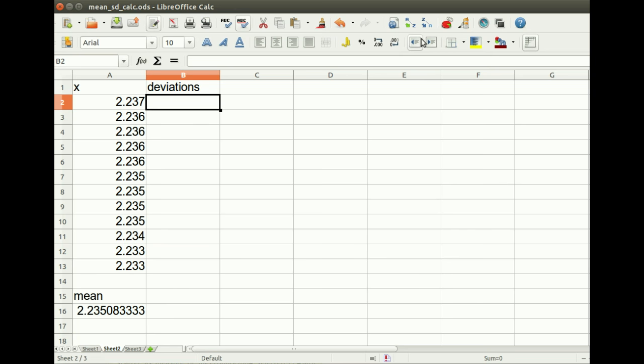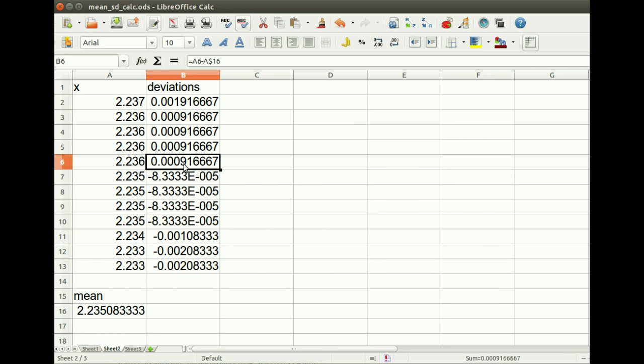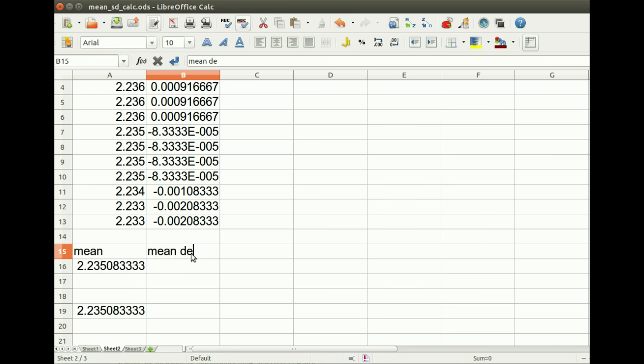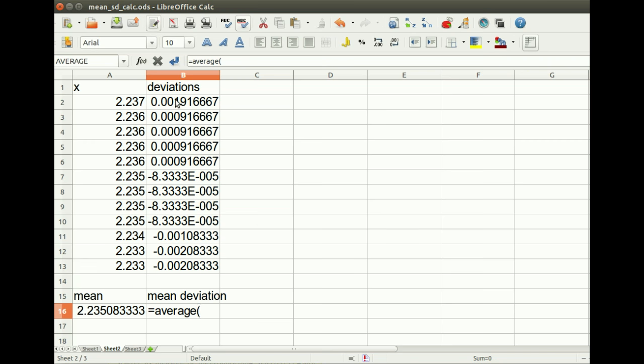One way to think about the typical range of variation is to realize that we sort of expect our measurements to cluster around the mean. Measurements in the middle of the range should be the most common. And so we can think in terms of deviations from the mean. You can calculate a deviation from the mean just by taking a measurement and subtracting the mean from it. And so if you do that for all of the measurements, you get a bunch of different deviations. Now we want to know what the typical deviation is. Just as a typical measurement is the mean, you might be tempted to say, what's our mean deviation? Won't that be a typical deviation? So I'm just going to take an average of all these deviations.